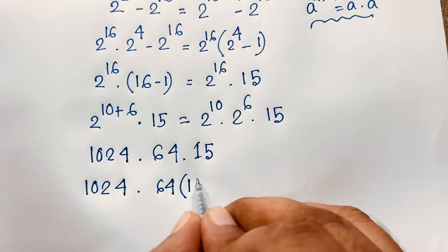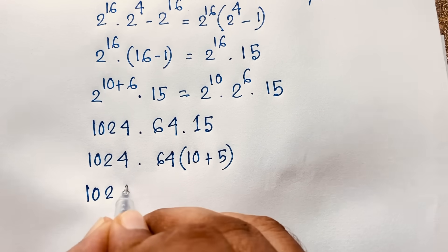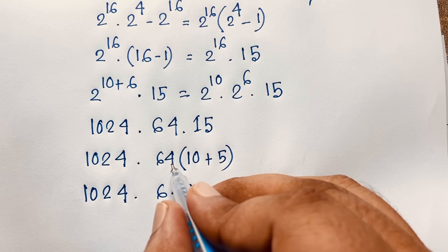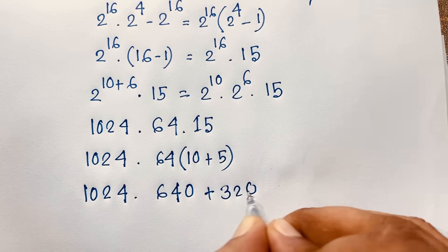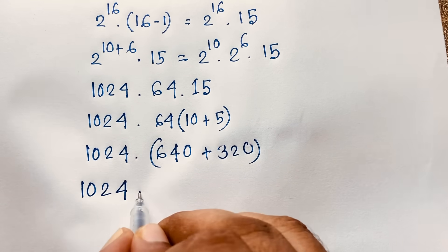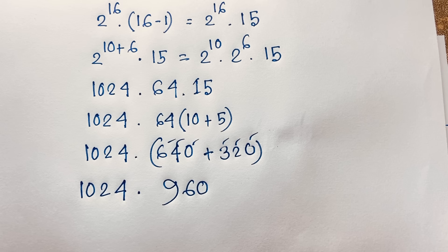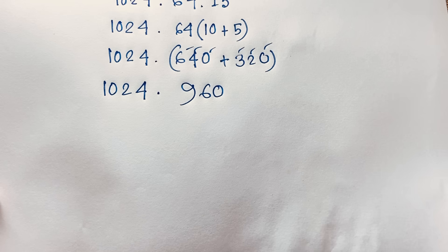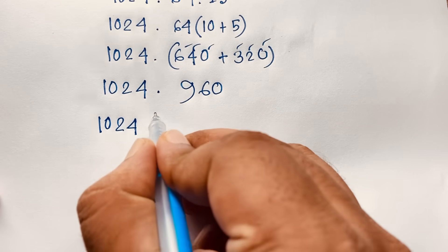Now we simplify 1024 times 64 times 15. We can break 15 into 10 plus 5. So 1024 times 64 times 10 gives 640, and 64 times 5 gives 320. Combining these and multiplying through by 1024 gives us 1024 times 960.